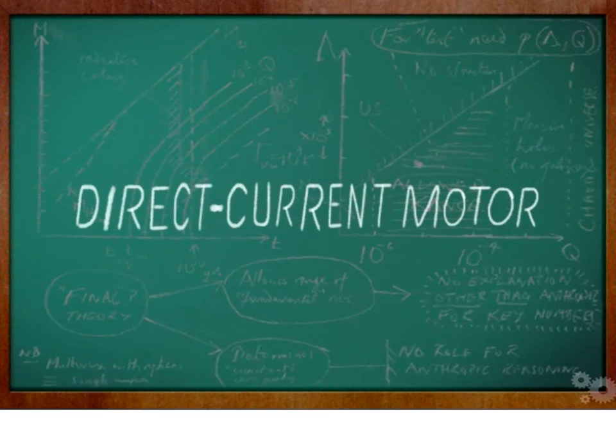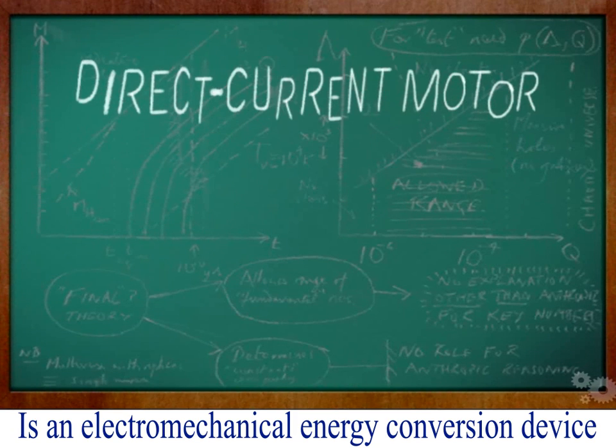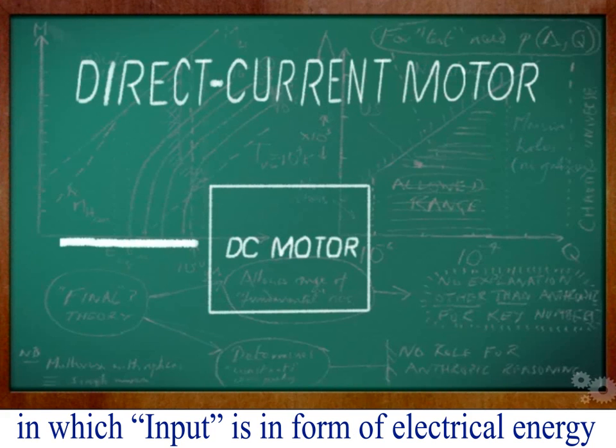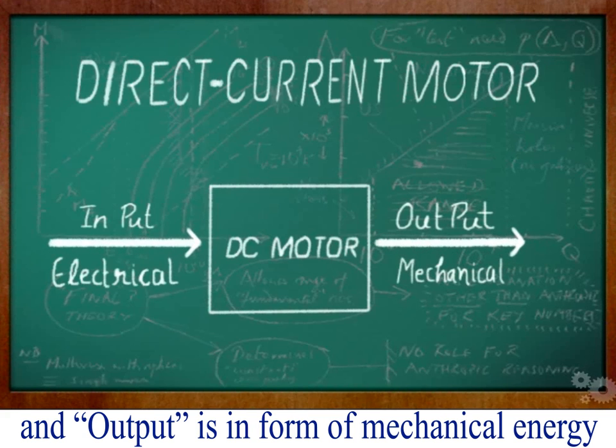A DC motor is an electromechanical energy conversion device in which the input is in the form of electrical energy and the output is in the form of mechanical energy.